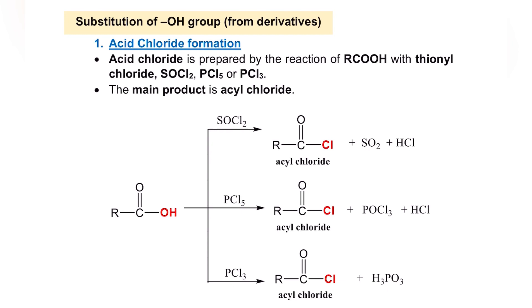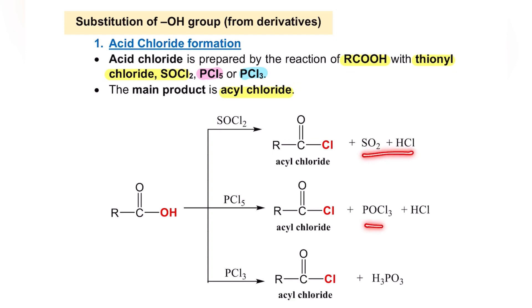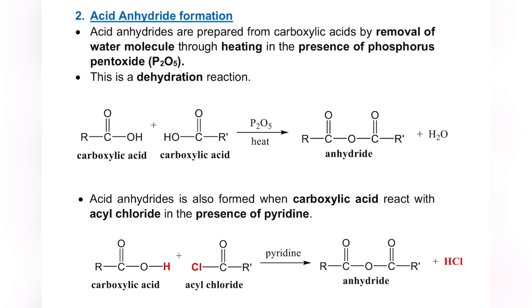Next, we continue with another reaction of carboxylic acid: substitution of the OH group. The first derivative we will form is acid chloride. Acid chloride can be prepared from the reaction of carboxylic acid with thionyl chloride, PCl₅, or PCl₃. The main product you will get is acid chloride, where the OH group is substituted with Cl. That is why it is called substitution of the OH group — the main product is the same acid chloride, but different side products are formed depending on the reagent used.